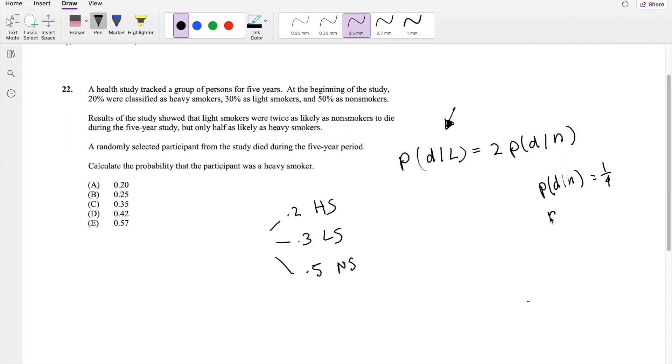So now just assign a random thing for normal people. So if the death given normal people is, let's say, like 1/4, then the probability of death given light smokers is equal to 2 times 1/4. And we know that 1/2 is definitely greater than 1/4, so we know that this statement is true. So sometimes if I'm not sure, I like to do that little mini-check.